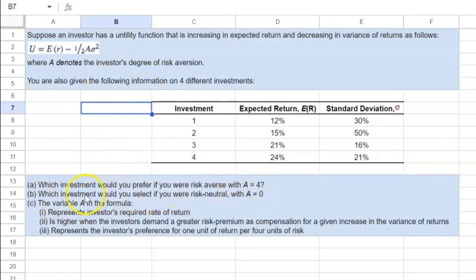The other question is, what happens if you are risk neutral with A equal to zero? Notice with A equal to zero, all of this basically becomes equal to zero. And that is our way of saying that utility is purely a function of expected return.